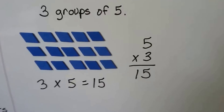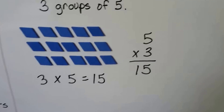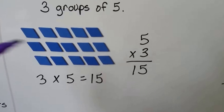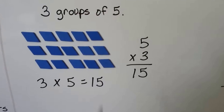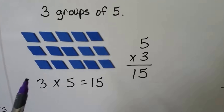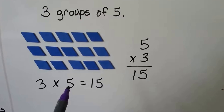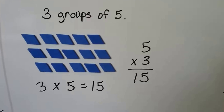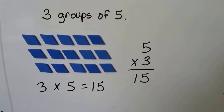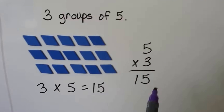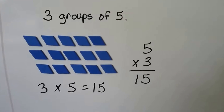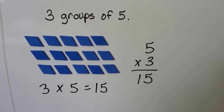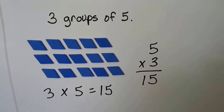We have three groups of five — one group, two groups, three groups — and there are five in each group. Three groups times five in each group: three times five equals fifteen. And we can also write it this way: five times three equals fifteen. It still equals fifteen.